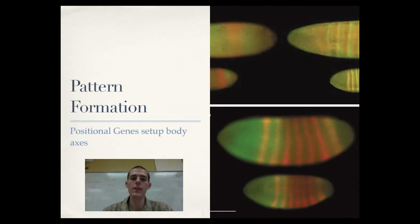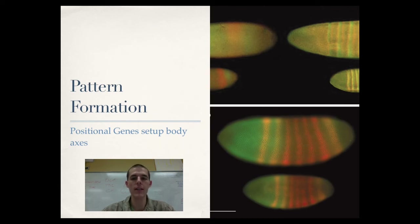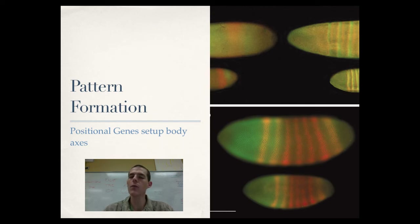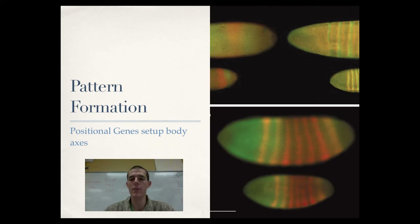Once we go from differentiating cells into what they're going to become and getting their morphogenesis, we get pattern formation. There is a set of genes called positional genes, and they set up the body axis — they tell the developing embryo where front and back, right and left, up and down is. The picture here is of a drosophila fruit fly embryo, which is one of the best studied organisms when it comes to genes helping form a body plan. Those fluorescent bands across the embryo are different genes labeled by researchers that take up different positions on the body as they are expressed. Positional genes are responsible for setting up all of that.